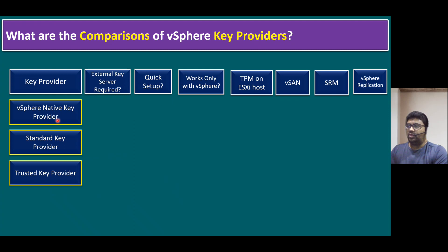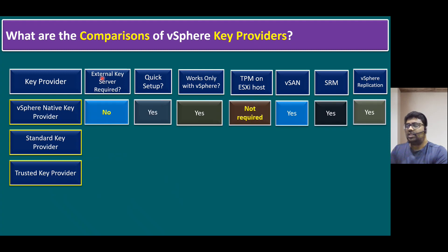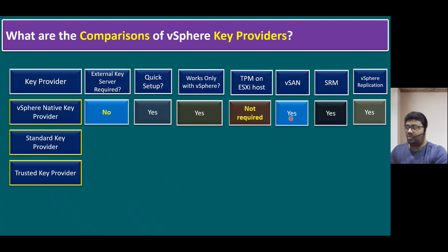Now it's time to compare all three key providers. The first one is vSphere Native Key Provider. External key server required? No — we just created it without any external key management server. Quick setup? Yes — we did it quickly in the lab. Works only with vSphere? Yes — it won't support third-party hypervisors. TPM on ESXi host required? No — even without a TPM we can configure it. For VMware products: vSAN is supported, Site Recovery Manager is supported, and vSphere Replication is also supported.